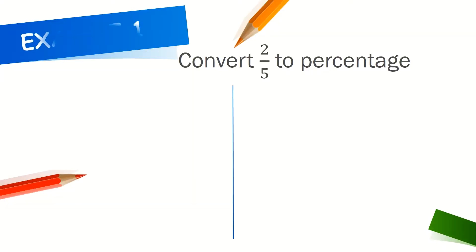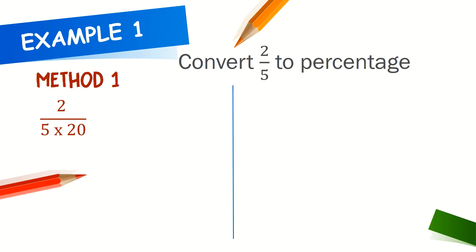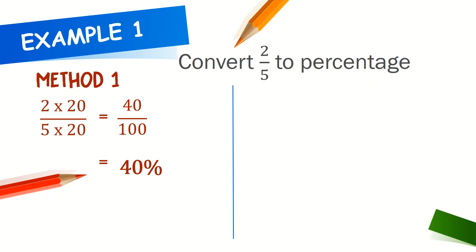Let's look at example 1. Convert 2 over 5 to a percentage. There are two methods to convert a fraction to a percentage. Method 1: find the multiplier for the denominator so that you can change the denominator to 100. 5 times 20 equals 100. Multiply the numerator as well. You will get 40 over 100. Now change 40 over 100 to a percentage — it is 40%.